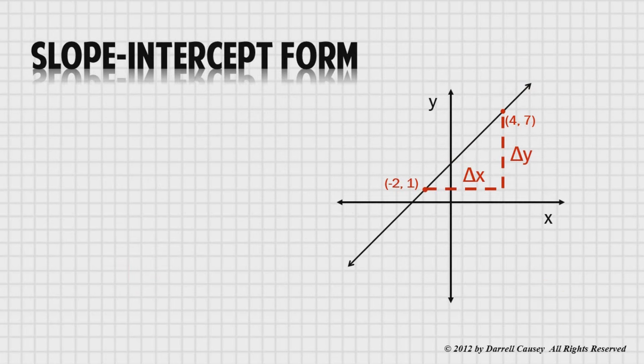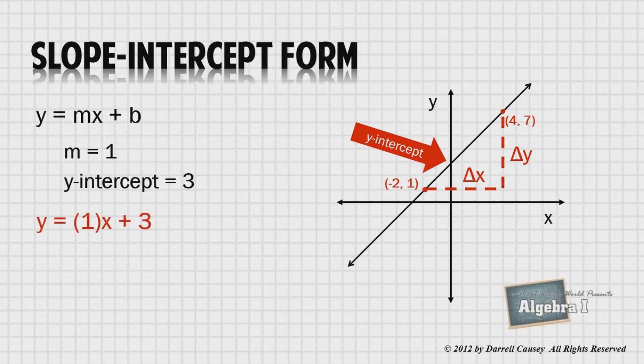Now let's find the y-intercept and write an equation for this line. y equals mx plus b is the slope-intercept formula. The slope is 1. The y-intercept is 3. So, the equation is y equals 1 plus 3, or y equals x plus 3.